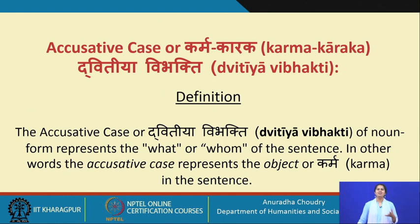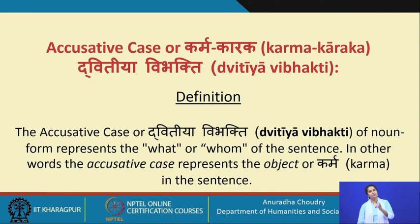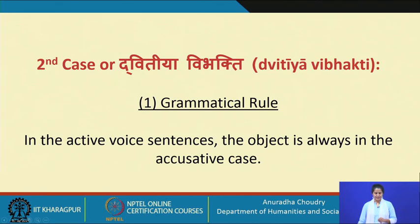In simpler terms, if I say 'I eat an apple', the verb is 'eat', and the question with the verb is 'eat what?' The answer to that is the object, which here would be given the accusative case, also called the karma karaka. This is the first simple rule and most widely used application of the second case: in active voice sentences, the object is always in the accusative case.